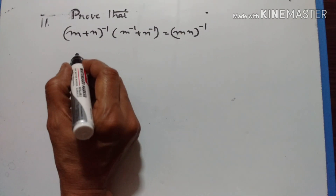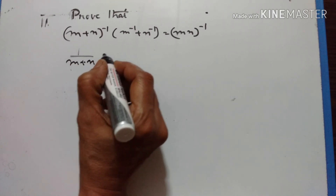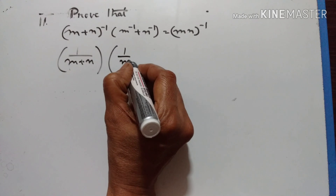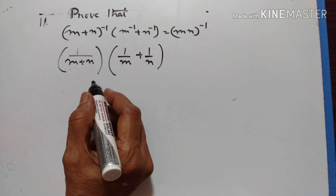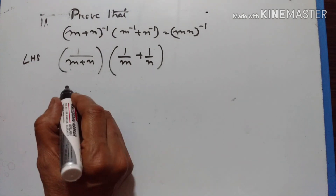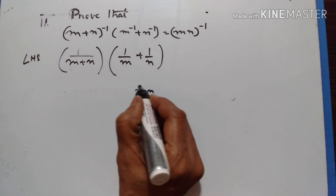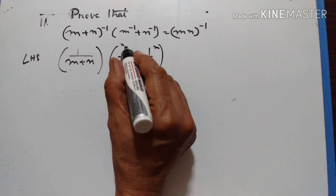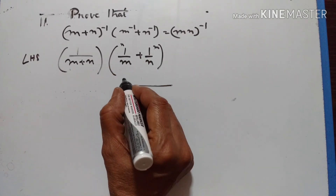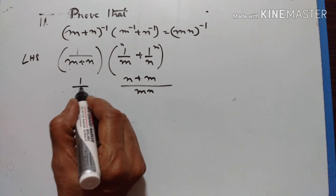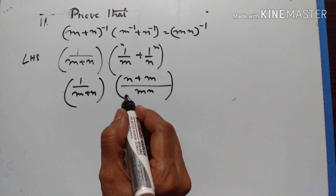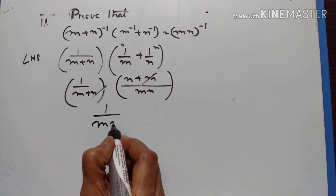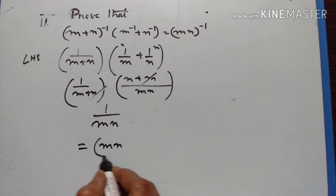Let us take the left hand side. This is 1 upon m plus n raised to the power of plus 1, into m raised to the power of minus 1 equal to 1 upon m plus 1 upon n. LHS: the LCM is equal to mn. mn divided by m is equal to n; mn divided by n is equal to m. So this is m plus n over mn. Here it is m plus n, here also m plus n, so they cancel off. Result is 1 upon mn, which is equal to mn raised to the power of minus 1.